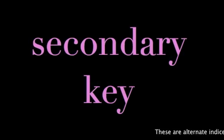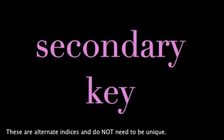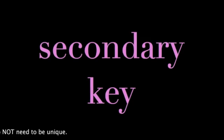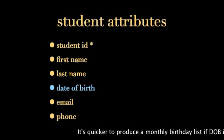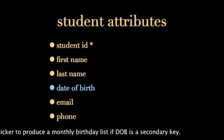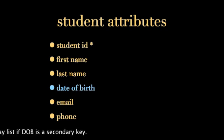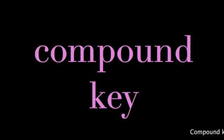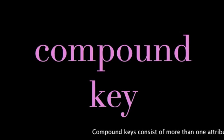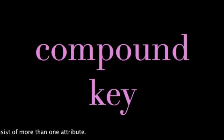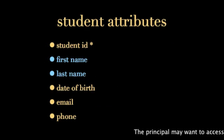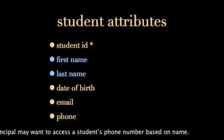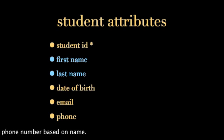Secondary keys are alternate indices and need not be unique. It would be much quicker and more efficient to produce a monthly birthday listing if the date of birth was a secondary key. Sometimes we combine attributes to form a compound key — for instance, we may need a student's first and last name to look up his phone number.